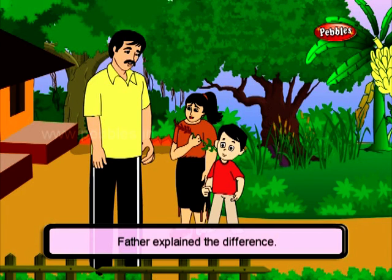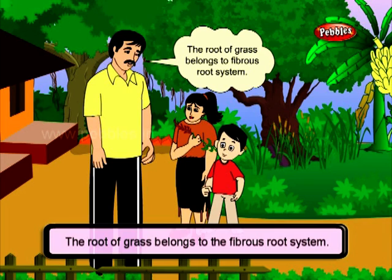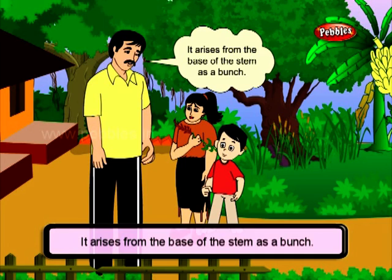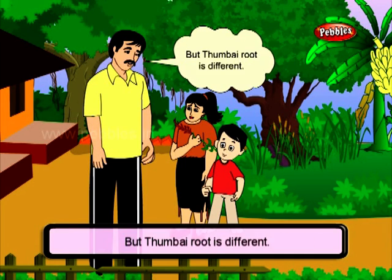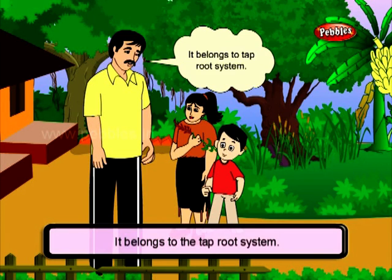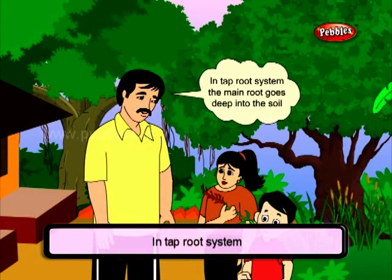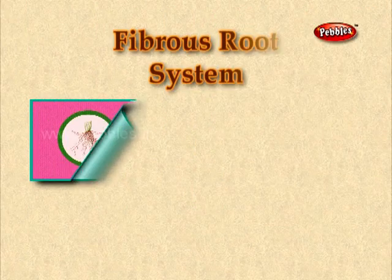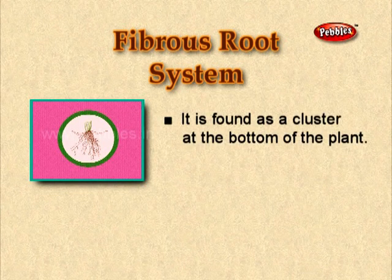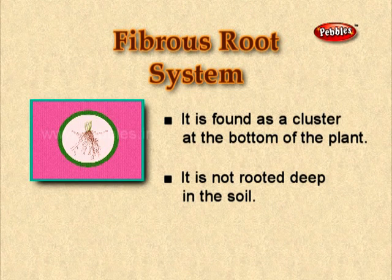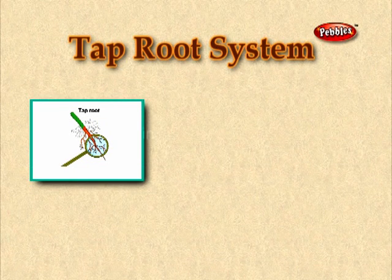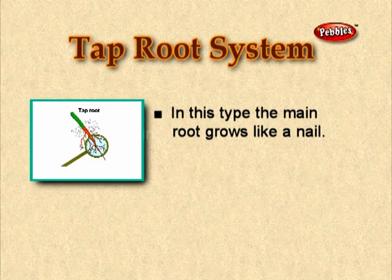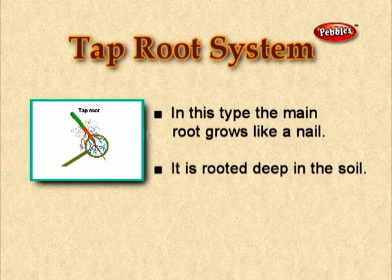Father explained the difference. The root of grass belongs to the fibrous root system. It arises from the base of the stem as a bunch. But Tumbai root is different — it belongs to the tap root system. In the tap root system, the main root goes deep into the soil to fix the plant firmly. Fibrous root system is found as a cluster at the bottom of the plant and is not rooted deep in the soil. In the tap root system, the main root grows like a nail and is rooted deep in the soil.